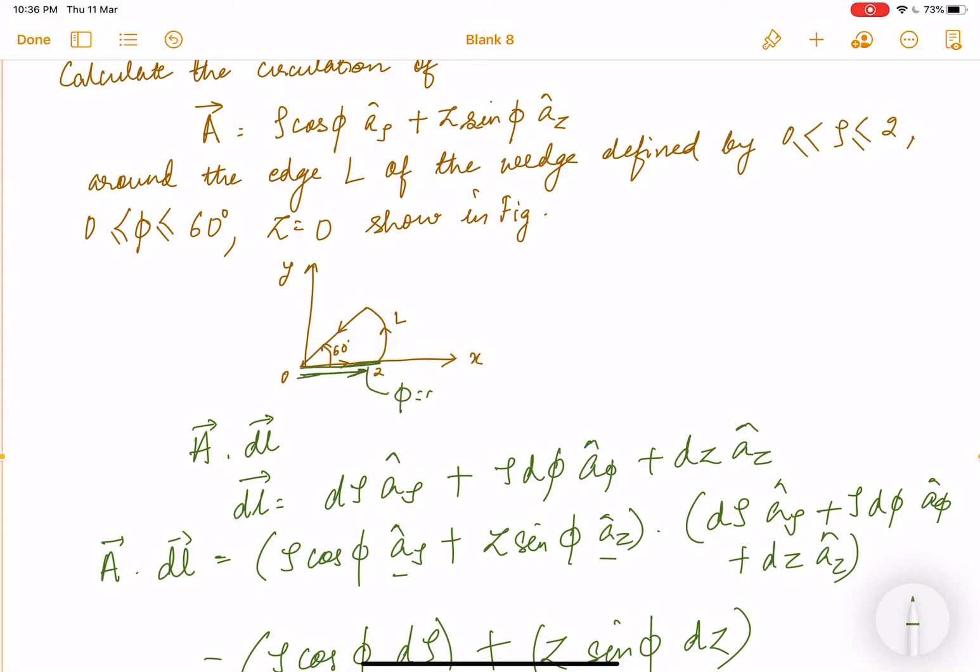here φ is 0 degrees. As we all know, φ increases from the x-axis. So basically in this line φ is 60 degrees. So ρ varies from 0 to 2 in this line on the x-axis, and ρ is also varying in this line at φ equals 60 degrees. And in between this portion, φ is